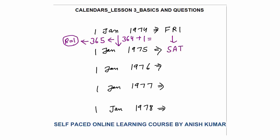So Saturday. The key concept: same date to same date, one year gap — there will be only one day difference. Now look at 1975 to 1976. This is also not a leap year, so total 365 days from 2nd January 1975 to 1st January 1976. Again one odd day, so the day will be Sunday.